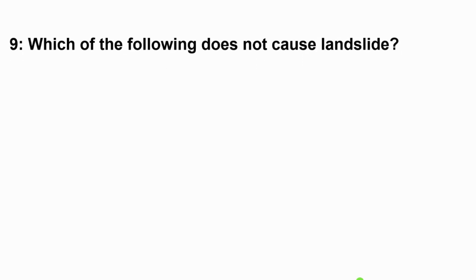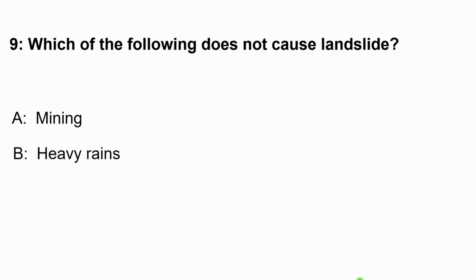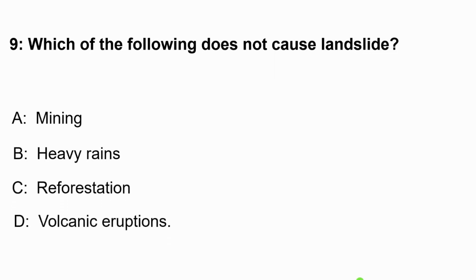Question 9: Which of the following does not cause a landslide? Option A, mining. Option B, heavy rains. Option C, reforestation. Or option D, volcanic eruption. The correct answer is reforestation.